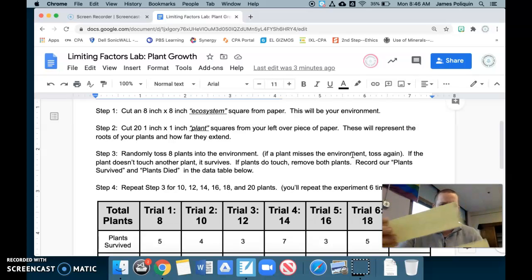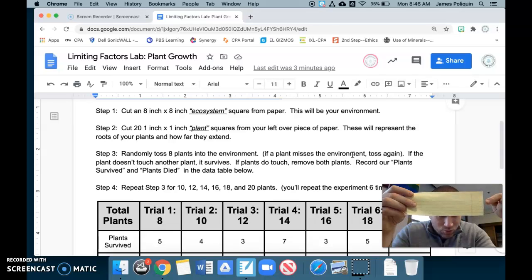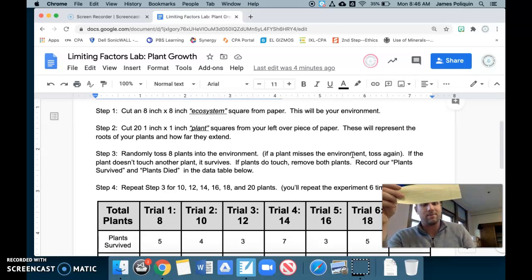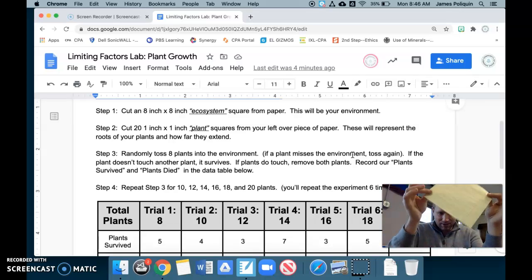If you don't have a ruler, that's okay. What you can do with your sheet of paper, at the top, you have this blank space here. Then you have blue lines. One, two, three, four, five, six. On the sixth line, cut there, and then your ecosystem will be about eight inches by eight inches. And so you're going to set your eight inch by eight inch ecosystem off to the side.